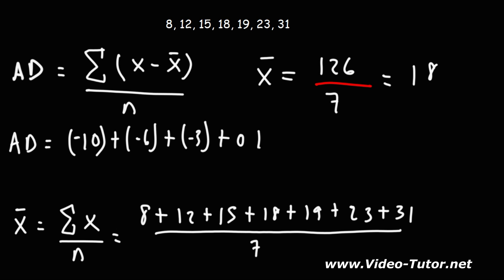15 minus 18 is negative 3. Then 18 minus 18 is 0. 19 minus 18 is 1.